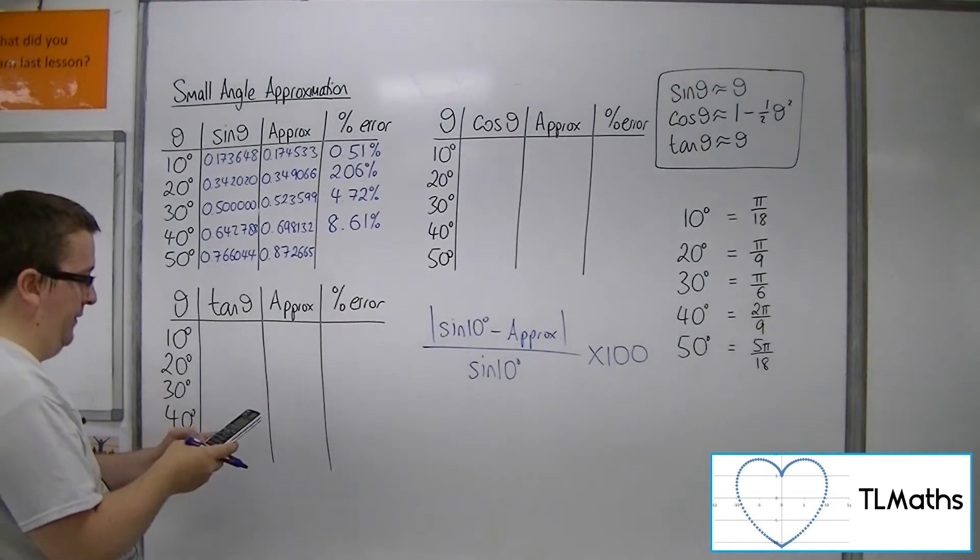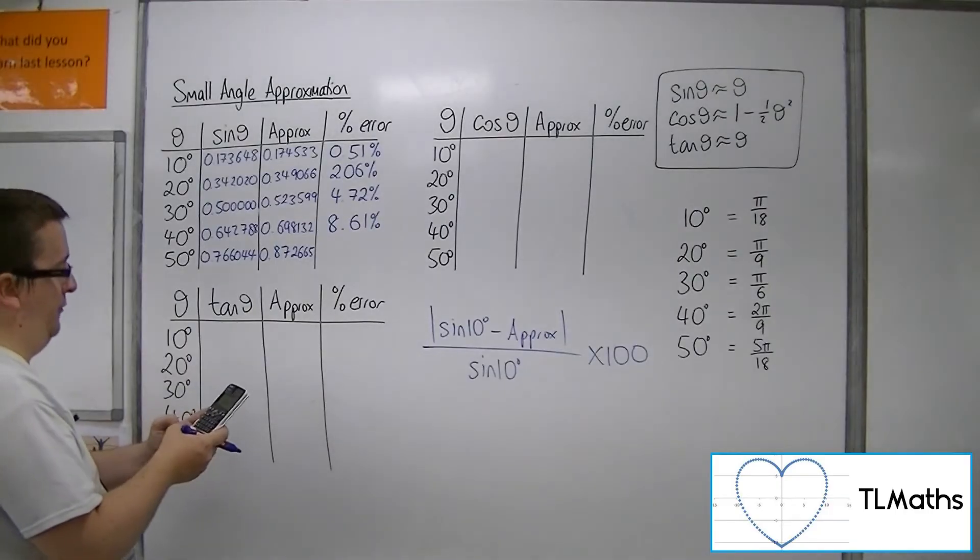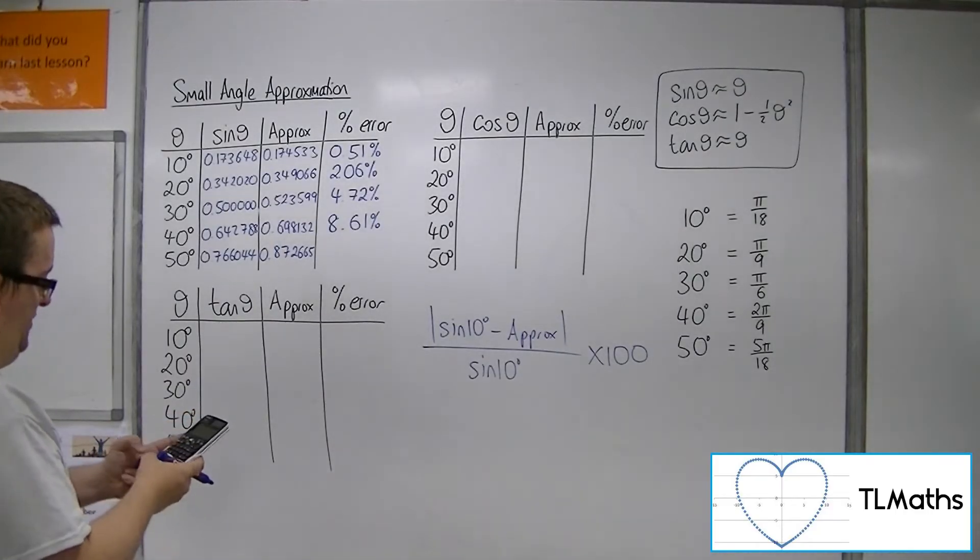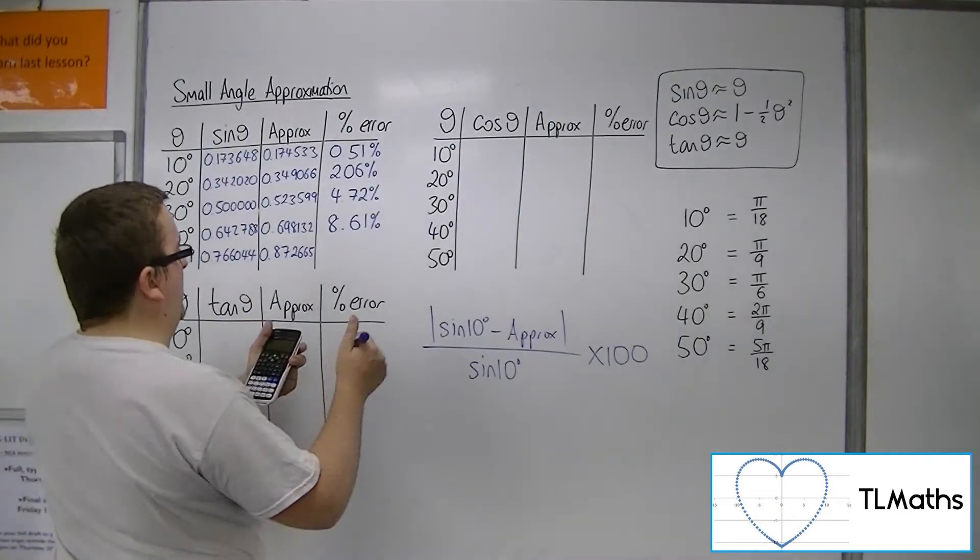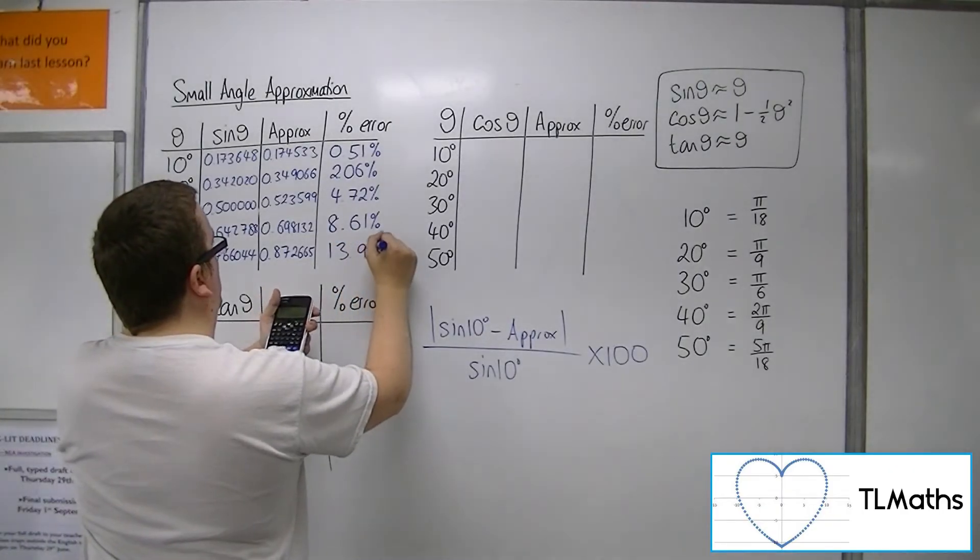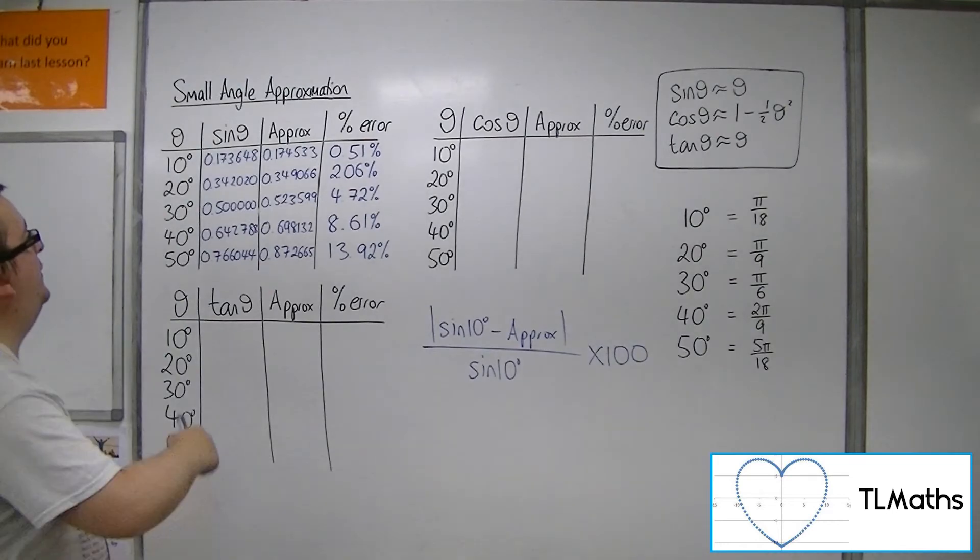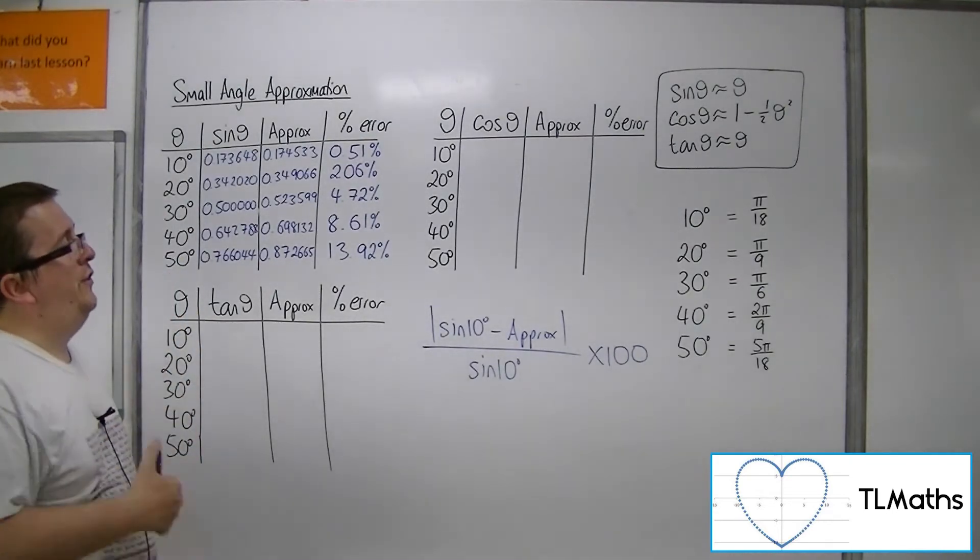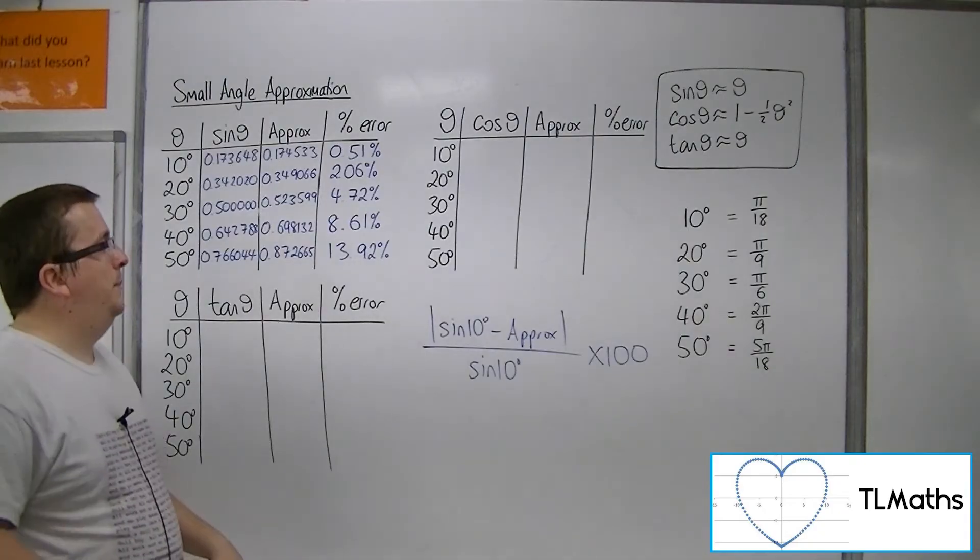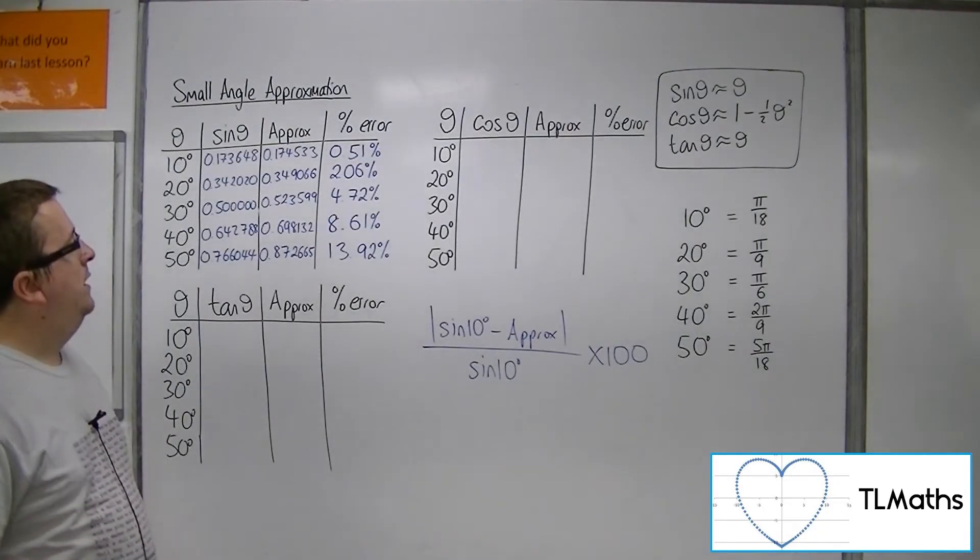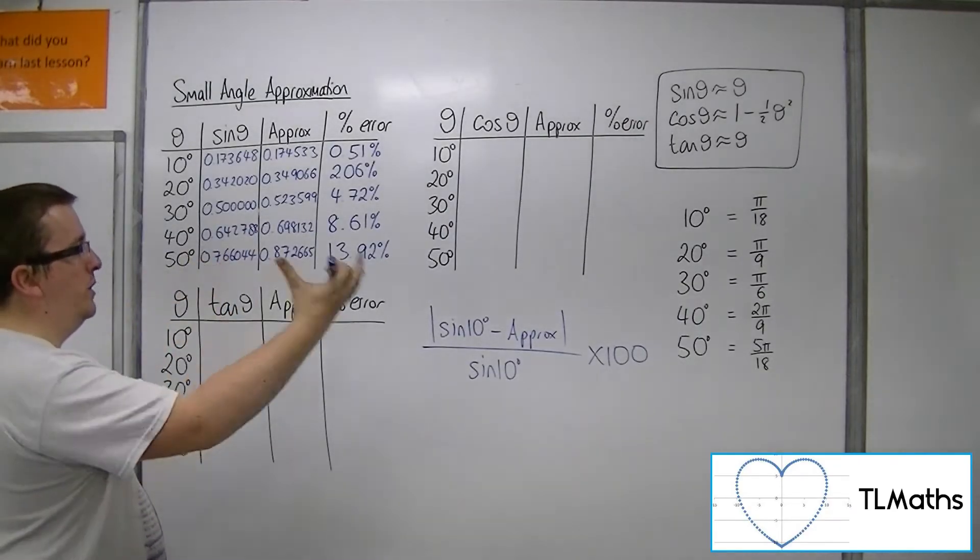And then, for 50 degrees, 0.766044, take away 0.872665, times that by minus 1 to make it positive. Divide by 0.766044, then times that by 100. And that gets me 13.92%. So, what we can see here is that as the angle is getting larger, the percentage error is getting larger as well. By the time you get to 50 degrees, you're almost at 15% error. What we want to do is to compare this against the percentage errors for cosine and tan.